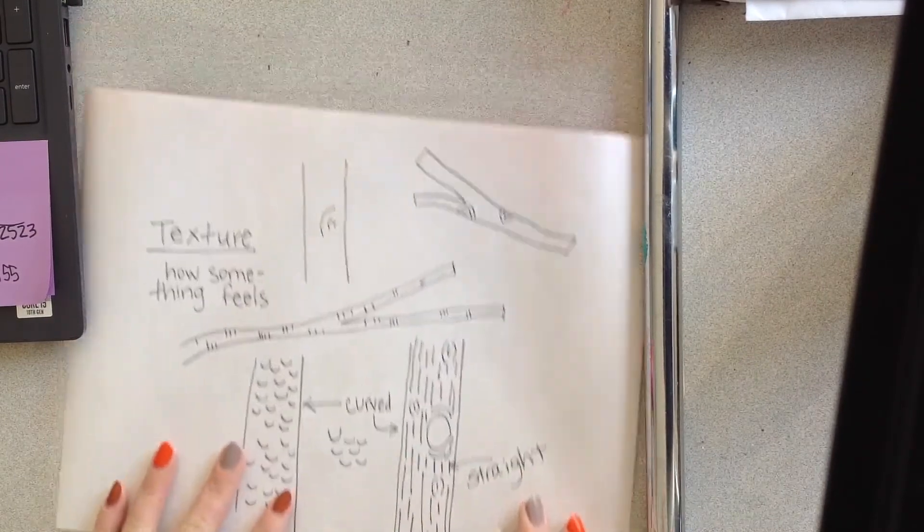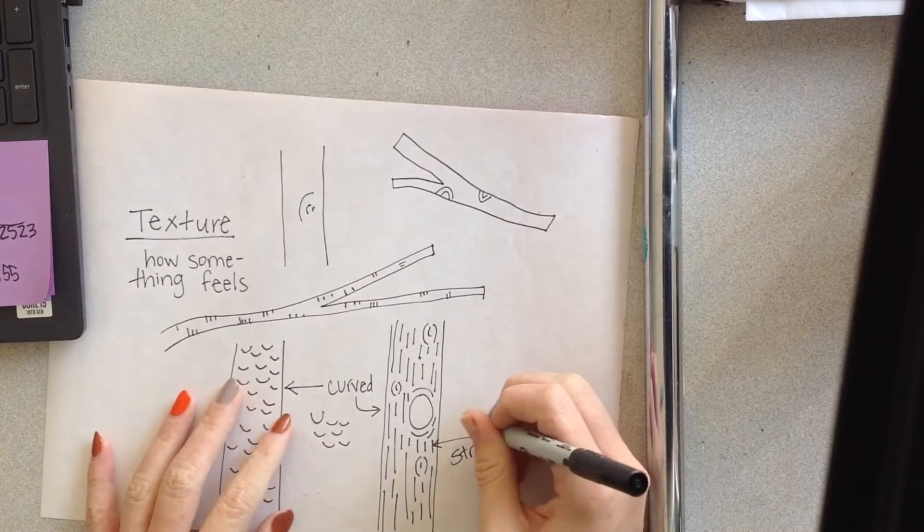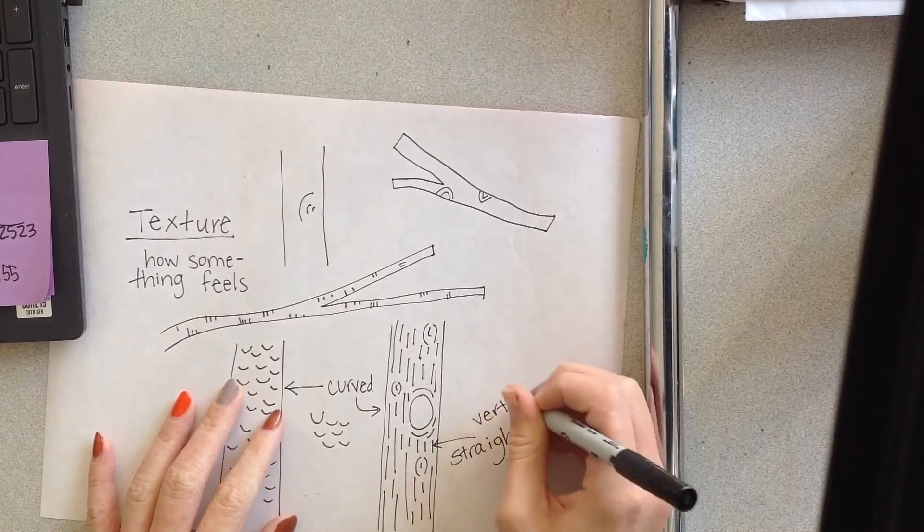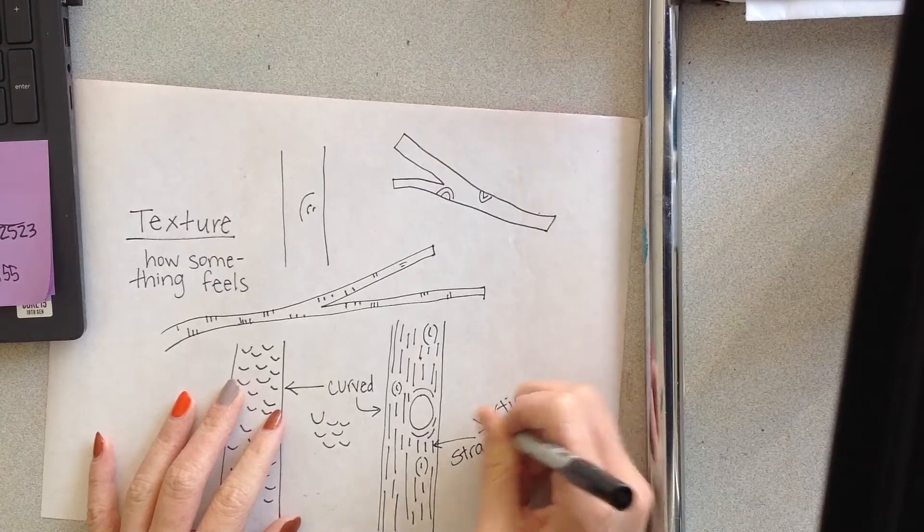Okay, and then I also noticed some, well these are vertical, let's write that, vertical straight lines.